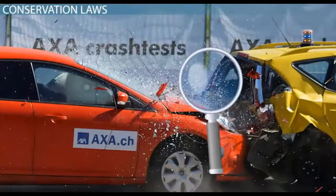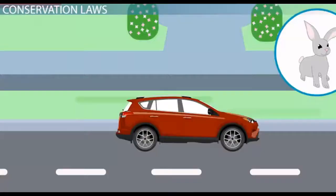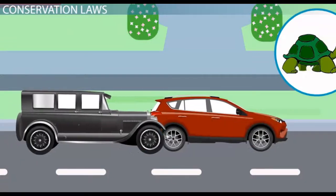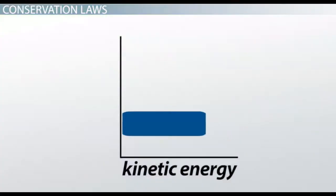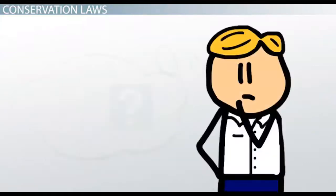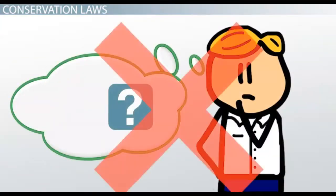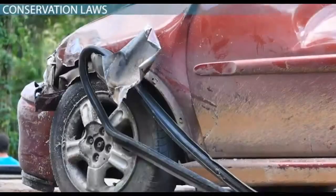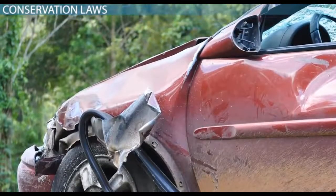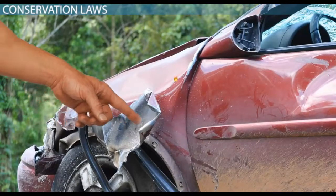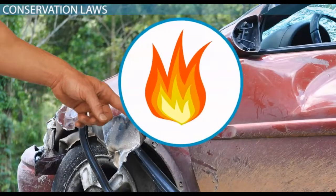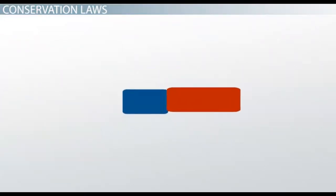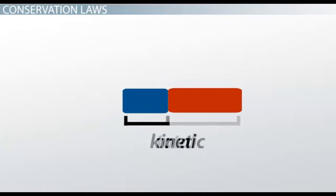Let's look more closely at what happens in an inelastic collision. When the two cars hit each other, after the collision they move together more slowly than the one car was moving beforehand. Therefore, the system has less kinetic energy after the collision than before. What happens to the energy? Does it disappear? No — remember that you cannot create or destroy energy, but it can change forms. When the cars collided, there was likely some damage to each car. If you were to put your hand on the site of damage, it would be warm, maybe even hot. Some of the kinetic energy of the system was turned into thermal energy. So, even though the total energy of the system was conserved, kinetic energy was not.